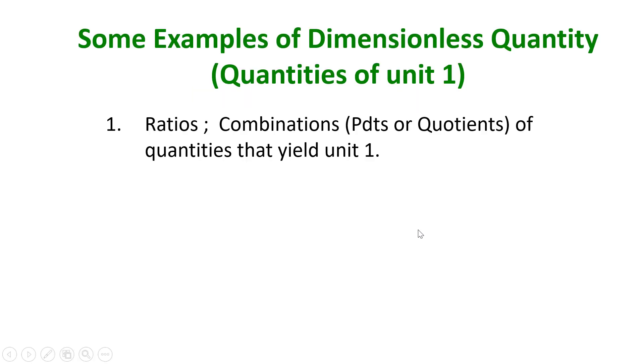So, we have seen that ratios of quantities of the same units, and in fact, if a quantity is made up of a combination of products or quotients of quantities that will yield a unit of 1, these are all known as dimensionless quantities.